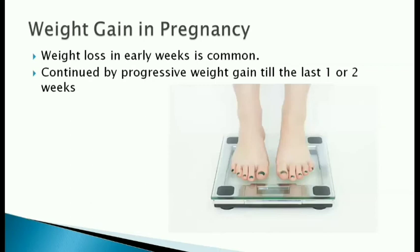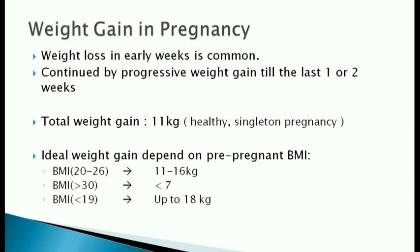Weight gain in pregnancy: In early weeks of pregnancy, there is weight loss due to nausea, vomiting, and reduced appetite. During the subsequent months, the weight gain is progressive till the last one or two weeks. The total weight gain during a singleton pregnancy for a healthy woman averages 11 kg. Ideally, the weight gain should depend upon the pre-pregnancy body mass index. Weight gain for a woman with normal BMI is 11-16 kg. An obese woman should not gain more than 7 kg.